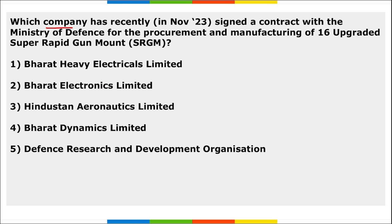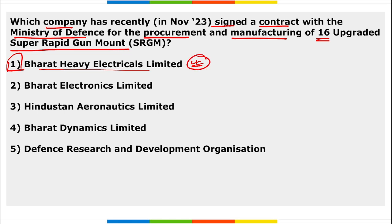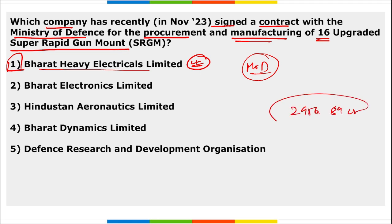Next: which company recently signed a contract with the Ministry of Defense for the procurement and manufacturing of 16 upgraded Super Rapid Gun Mounts? It is Bharat Heavy Electricals Limited (BHEL). The total cost for this contract was ₹2,956.89 crore rupees.